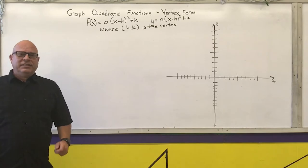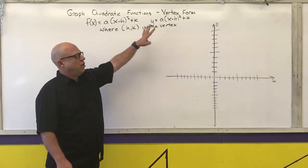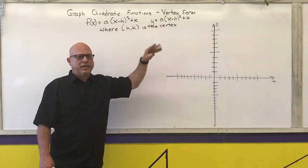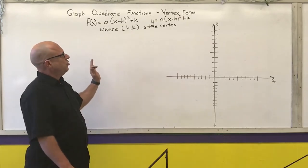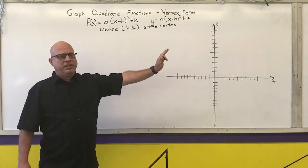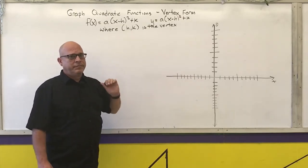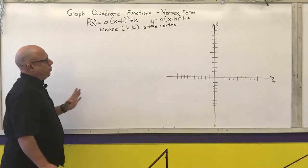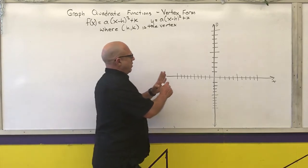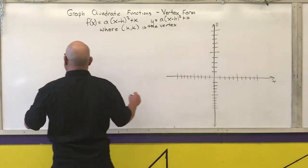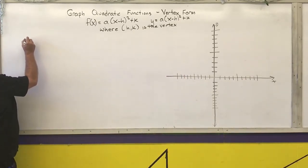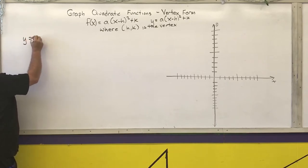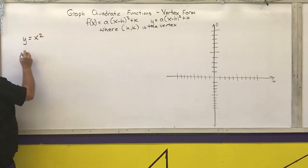The easiest way to see what's happening is for me to graph several quadratics so you can see what all these shifts are doing. Our generic quadratic is y equals x squared — that's our parent function.